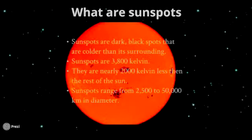Sunspots range from 2,500 to 50,000 kilometers in diameter. Now, keep in mind that the Earth is 12,742 kilometers in diameter, so you can imagine how big the sunspots are compared to Earth.